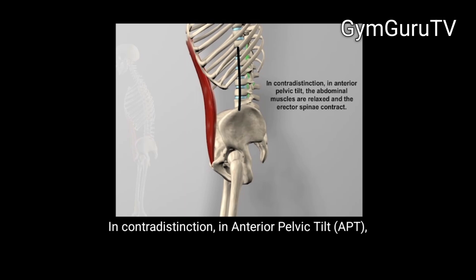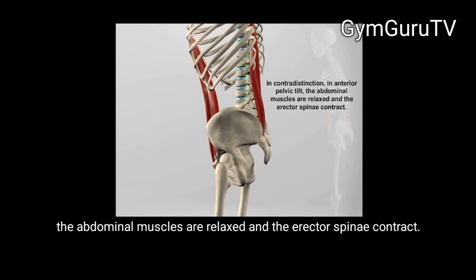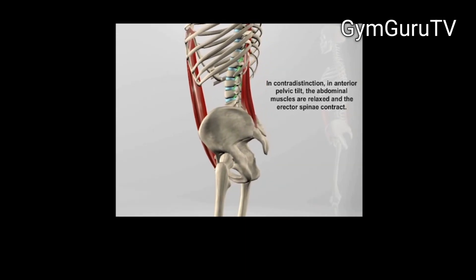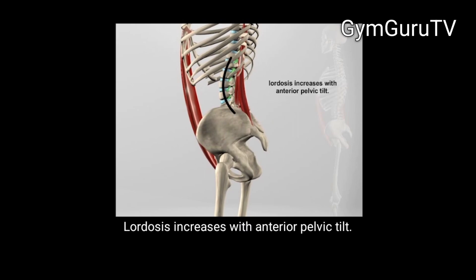In contradistinction, in anterior pelvic tilt, the abdominal muscles are relaxed and the erector spinae contract. Lordosis increases with anterior pelvic tilt.